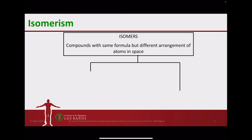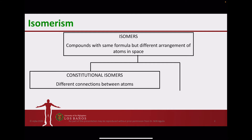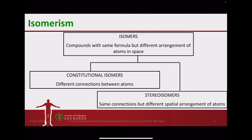There are two general types, and these are constitutional isomerism and stereoisomerism. In constitutional isomerism, the atoms are connected differently, whereas in stereoisomerism, there is the same connection but they differ in how the atoms are arranged in space.